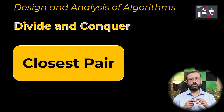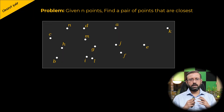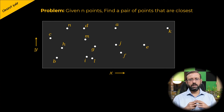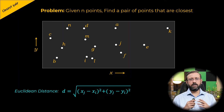In this video, we will look at the geometric problem known as the closest pair problem. The problem is: given n points, find a pair of points that are closest. Each point has an x coordinate and a y coordinate. We need to find a pair of points with the smallest Euclidean distance. The Euclidean distance d can be computed using the formula: square root of (xj minus xi) whole square plus (yj minus yi) whole square.